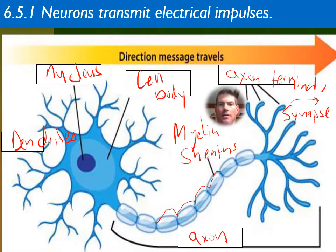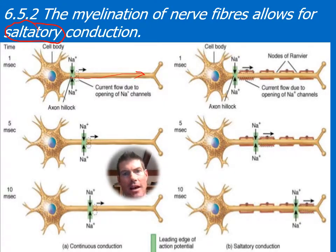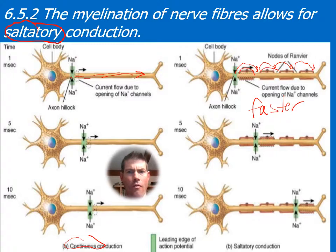This is saltatory conduction — a cool-sounding term. In a more primitive neuron, before we evolved more complex neurons, the signal had to move continuously along the axon, going cell by cell. But through evolution we have myelin sheaths, and the signal skips — like a rock skipping on a lake — which is much faster than traveling under the water.